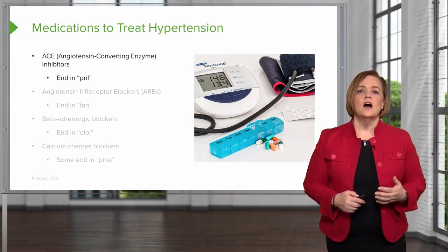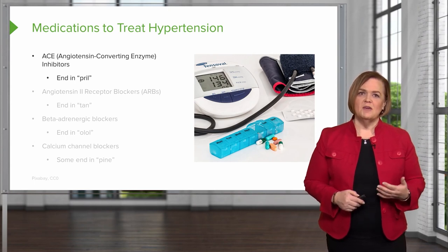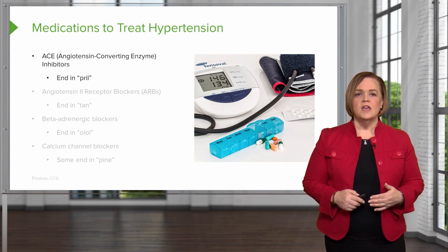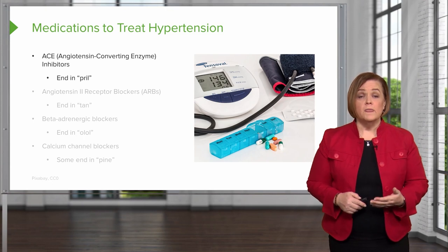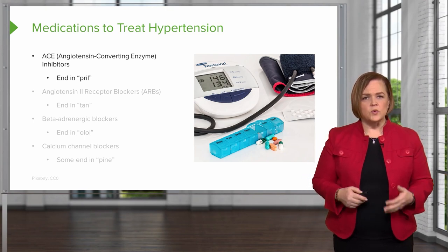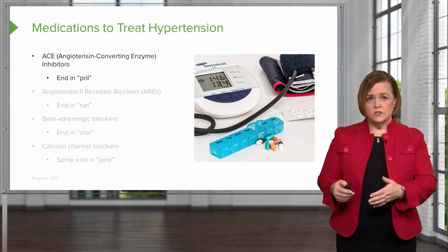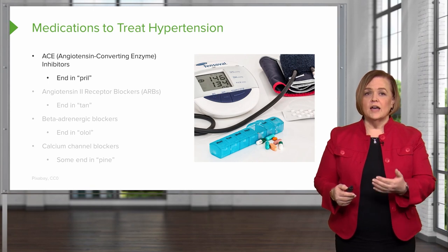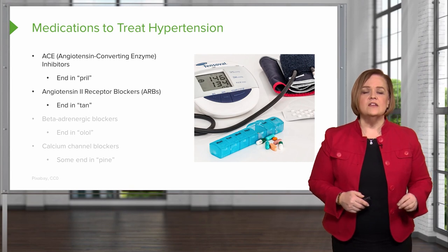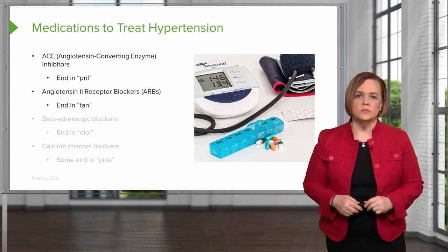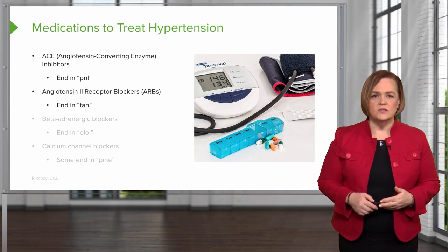ACE inhibitors are angiotensin converting enzyme inhibitors, but we just call them ACE inhibitors for short. If you look at their generic ending, they all end in P-R-I-L. This will help you remember — if you can't recognize what family a drug belongs to, look for the ending -pril and you've got a pretty good chance it's an ACE inhibitor. Angiotensin 2 receptor blockers are ARBs and they end in -TAN, and we'll talk about those drugs as we move through the rest of the video.